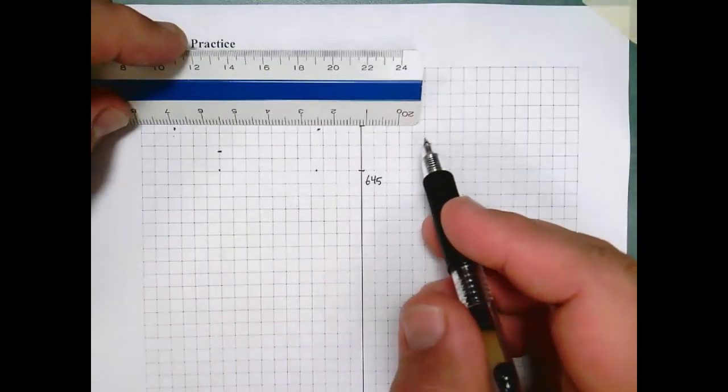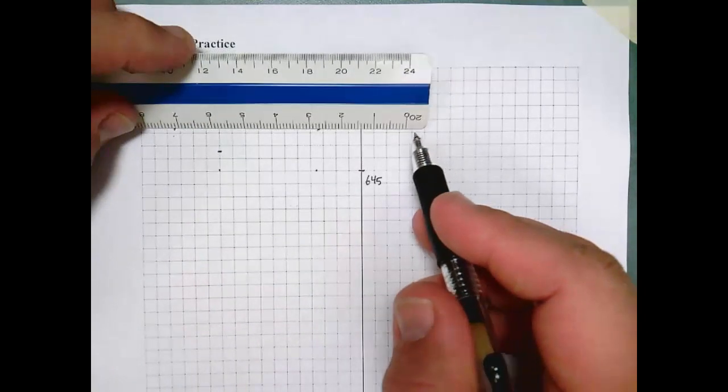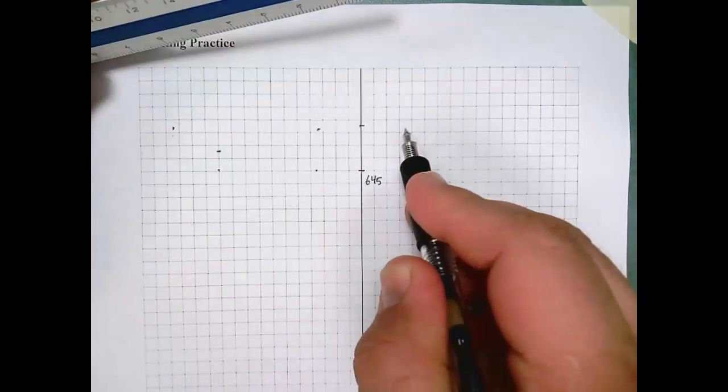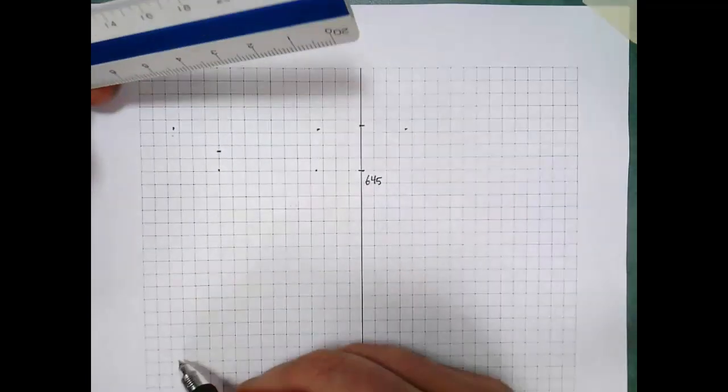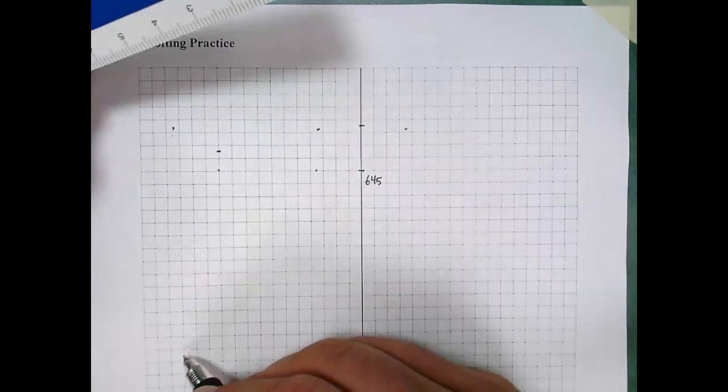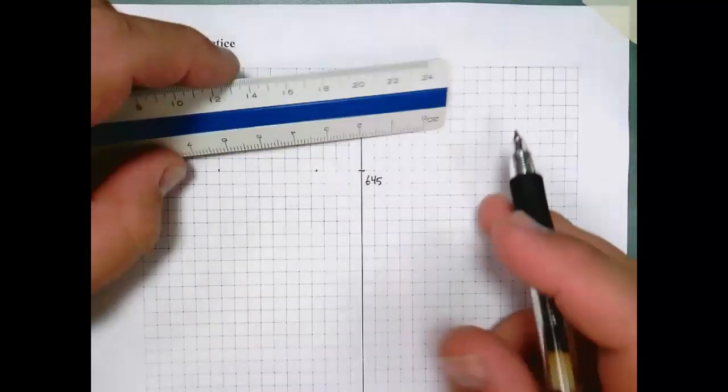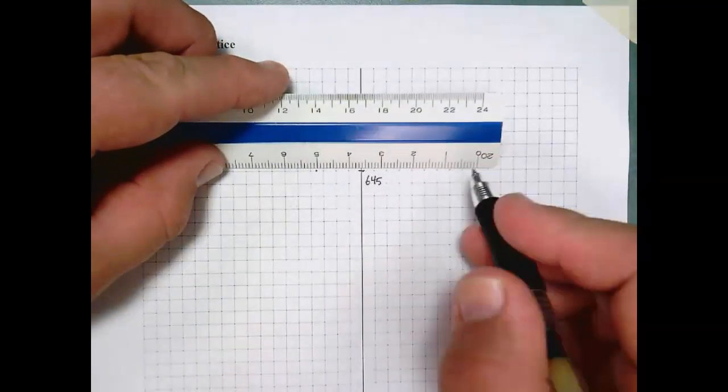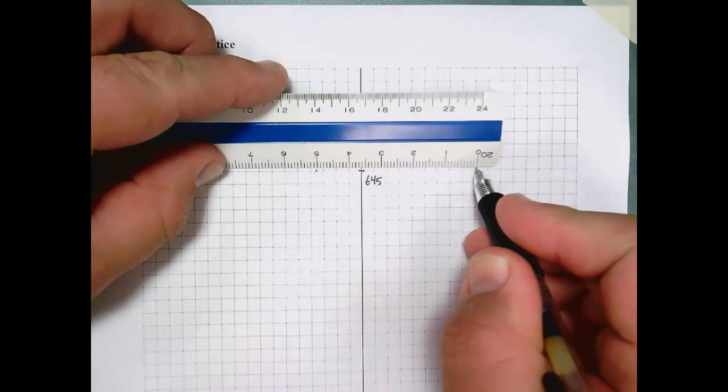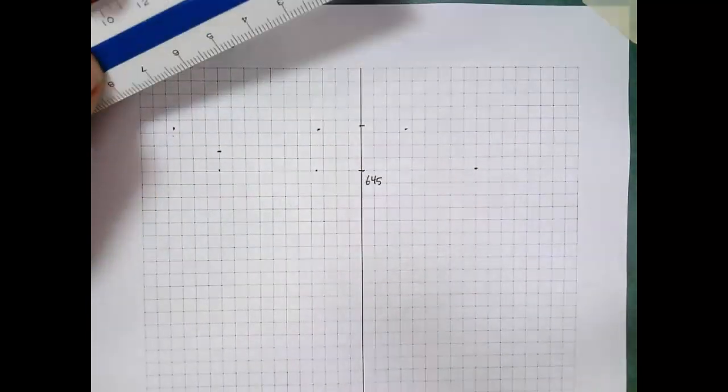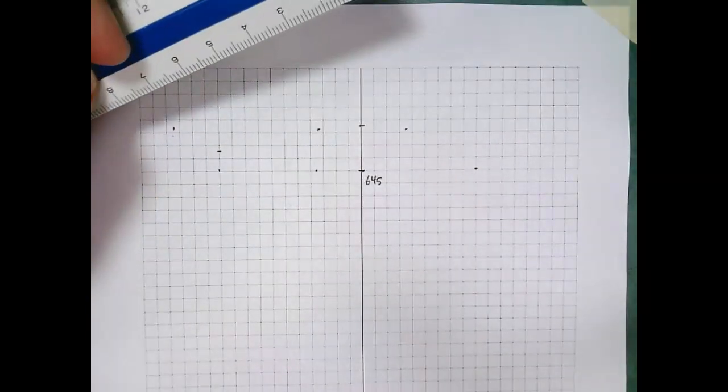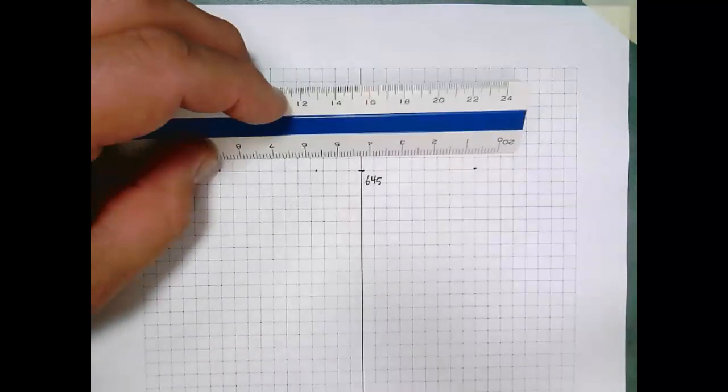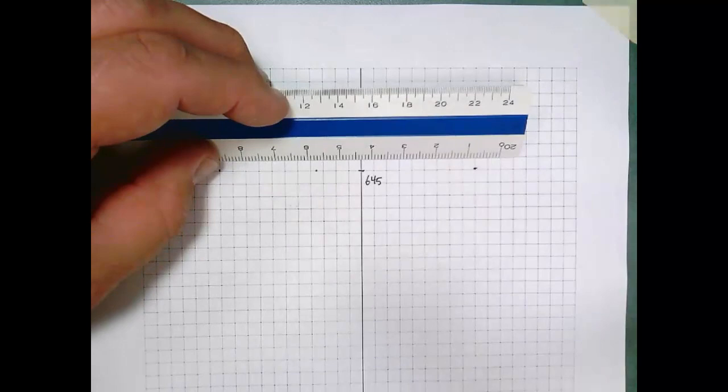I'm just going to keep going here, and I'm going to go to the right now. Now I want you to notice that the elevation at 14 foot left is the same as the elevation at 14 foot right. So you can see I'm plotting those at the same elevation. My next offset is at 36 feet right, and I'm looking for 645.2. So I'm just a little bit above the 645 line.